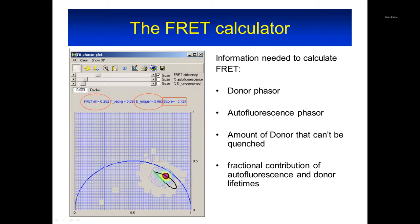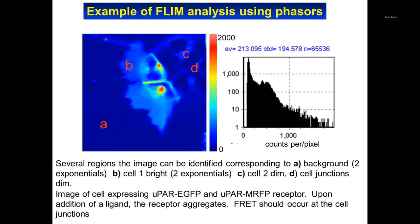This is the FRET calculator. It starts from whatever the donor position is — this is the experimental point — and shows a line. The point on that line which contains the experimental measurement directly gives you the FRET efficiency. So the phasor approach is very quantitative — it's not just a representation for exponential analysis; in the case of FRET it gives you quantitative data.